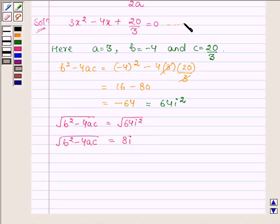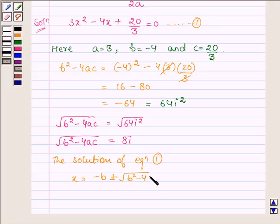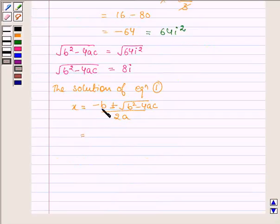So let us write the given equation by equation number 1. Then the solution of equation 1 is given by x = -b ± √(b² - 4ac) / 2a. b is -4 so we have -(-4) ± √(b² - 4ac) which is 8i.